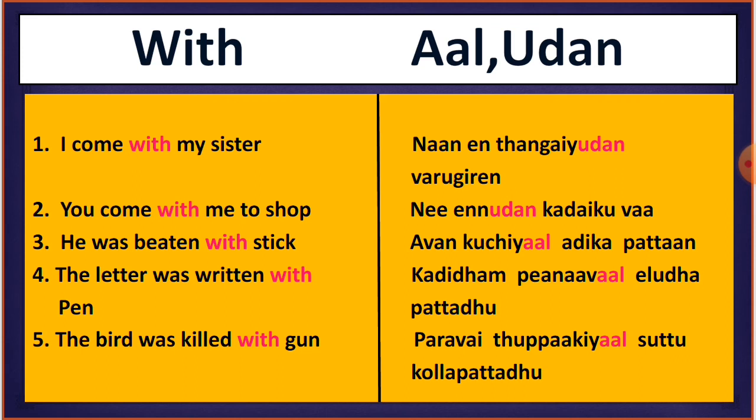The last example is: 'The bird was killed with a gun.' In Tamil: 'Paravai tuppakiyal suttukollapattadu.' 'Paravai' means bird, 'tuppakiyal' means with gun, 'suttukollapattadu' means was killed. So with the help of the gun the bird was killed, and we use 'tuppakiyal' — gun with 'aal'.